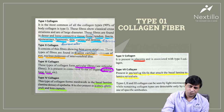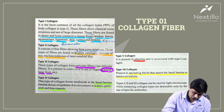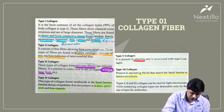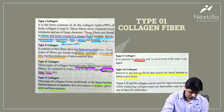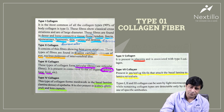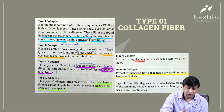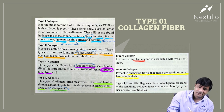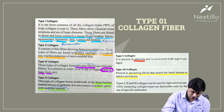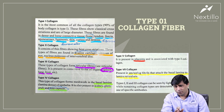Type 3 collagen — which was in the question — forms reticular fibers present in connective tissue of organs like spleen, lung, liver, and lymph nodes, forming the internal framework of these organs. Type 4 collagen forms a meshwork in the basal lamina — the lamina densa of the epithelium — and is also present in kidney glomeruli and lens capsule. Basal lamina and lens capsule are really important locations for type 4 collagen.